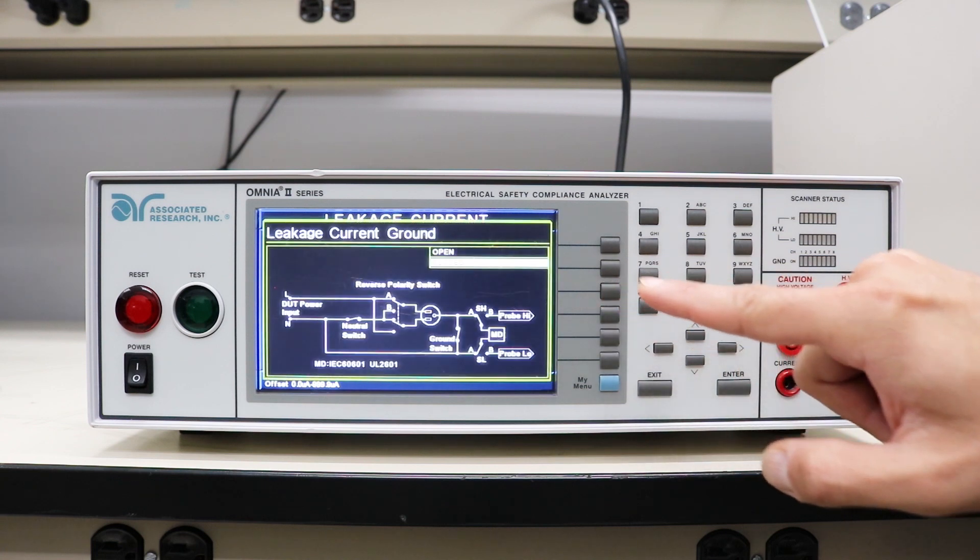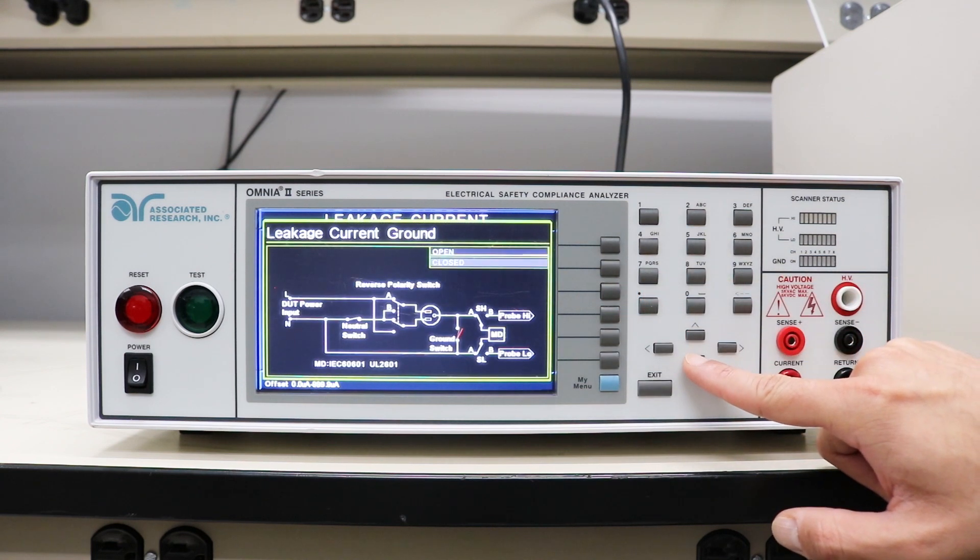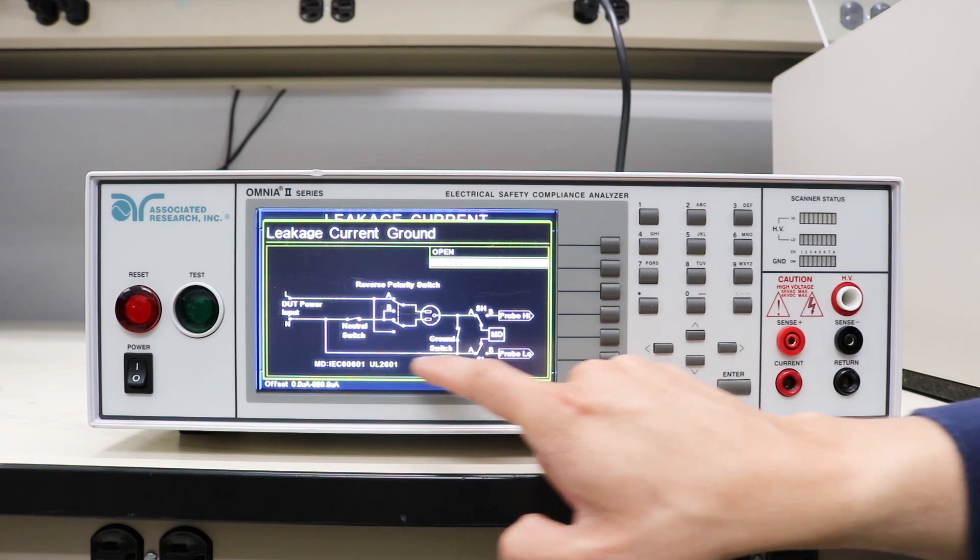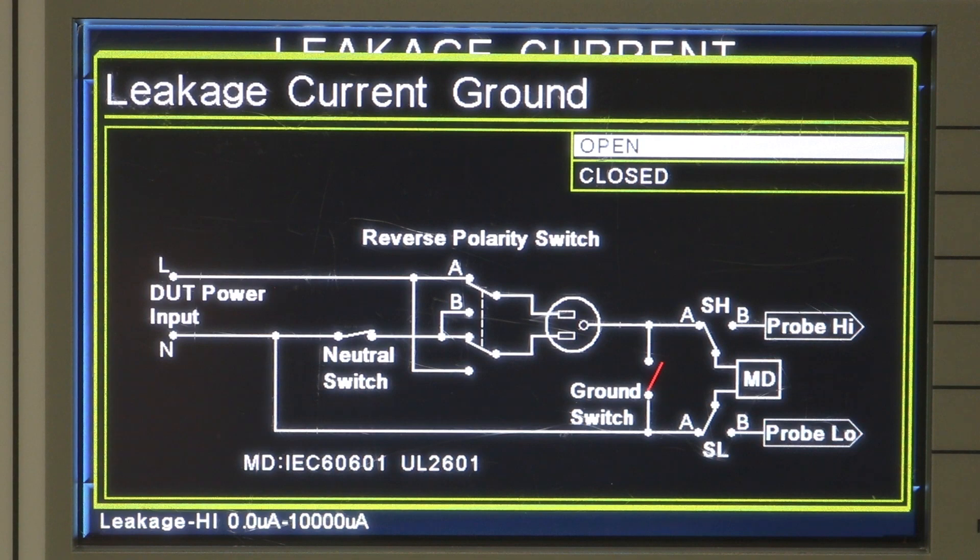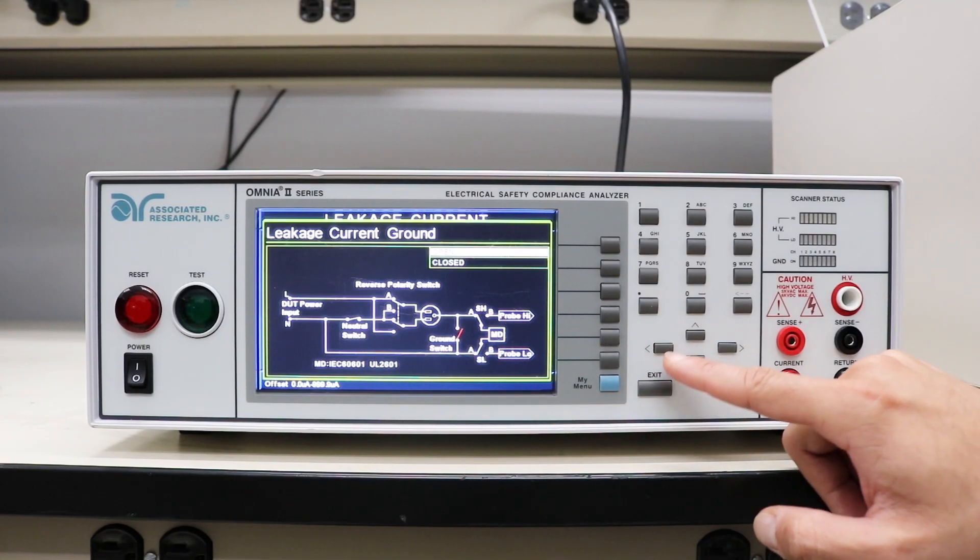I want to show you how this ground switch functions. When I have the ground closed, I'm basically providing the current a path bypassing the measuring device circuit back to the neutral side. In the next step when I open the ground, you'll see that all the current will flow through the measuring device circuit and we will see a reading.